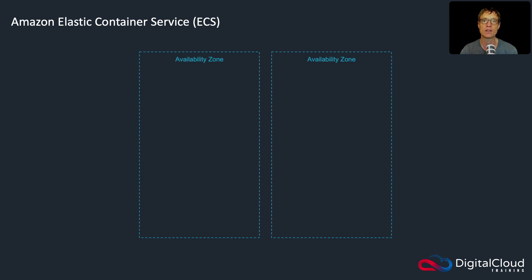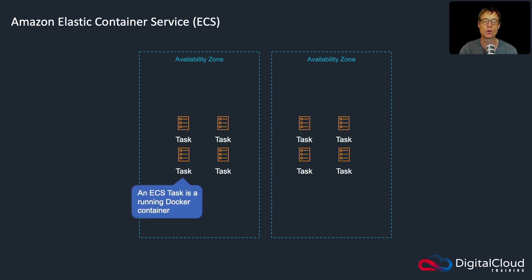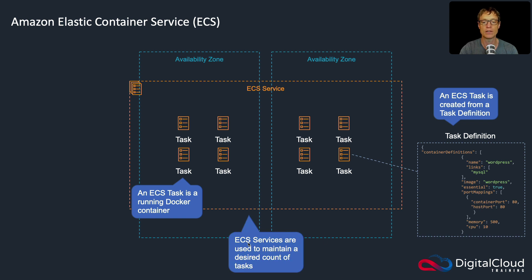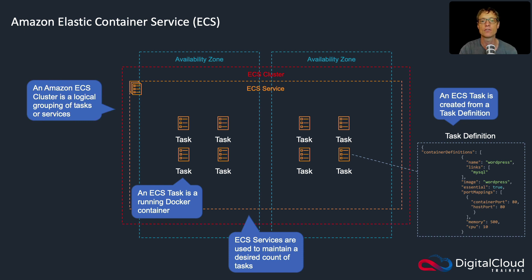Now we're going to look at the Elastic Container Service, which is an AWS service on which you can run Docker containers. We'll start by looking at the basic components. Firstly, we have a task, which is the running Docker container. A task is created from a task definition — a definition document where you define the container's configuration, the port it will use, and the memory and CPU allocation. Containers are created within a service, which maintains a desired count of running containers. We then have a cluster, which is a logical grouping of tasks and services.